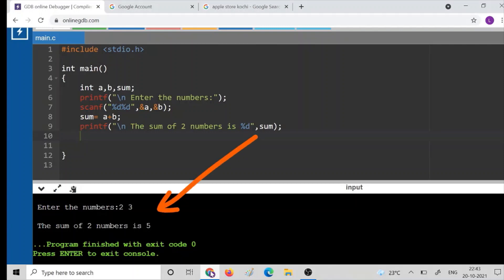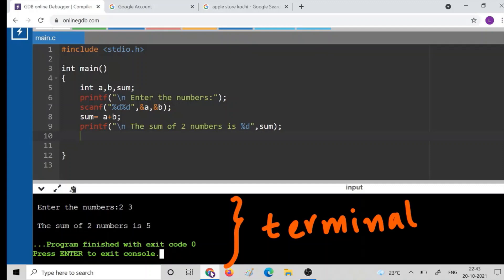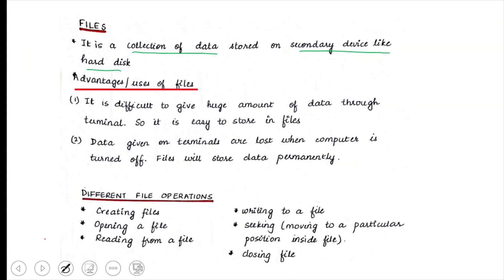The terminal is the area through which we give input to the program and see the output. The advantage of using a file is that it is very difficult to give a huge amount of data through the terminal — for example, entering a thousand numbers. Also, terminal data is lost once you exit, whereas files store data permanently. These are the main advantages and uses of files.